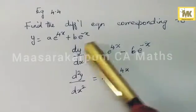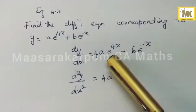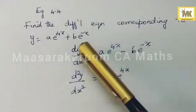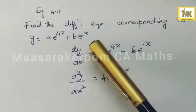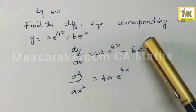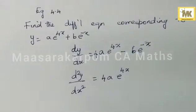Then, 4x differentiates to 4, so you will get 4a e to the power 4x. Then b times e to the power minus x: e power minus x stays, and minus x differentiates to minus 1, giving minus b e to the power minus x.